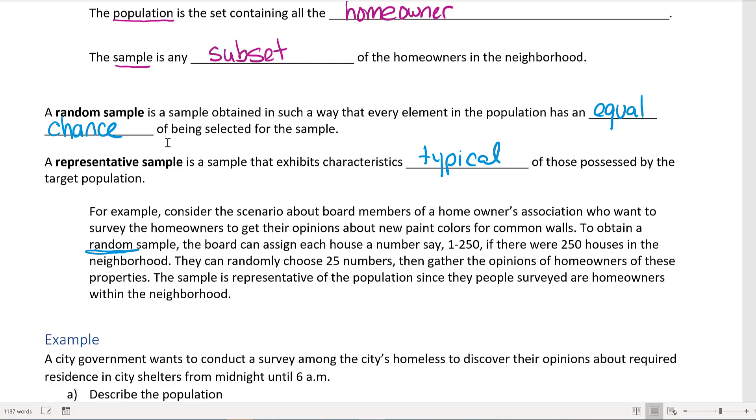The sample is random because they randomly chose 25 numbers out of the 250 houses. The sample is representative of the population since they only surveyed homeowners within that neighborhood. If instead they surveyed people from all of the United States about the paint colors, that wouldn't be representative of the association. They only pull people from the 250 houses in their population.